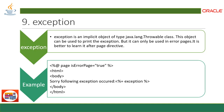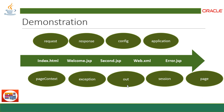`exception` is an implicit object of type java.lang.Throwable. This object can be used to print the exception. It can only be used in error pages, and it is important to learn it alongside the page directive. This is how you can define and get the exception in the JSP page.